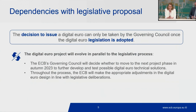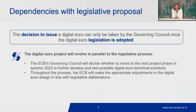A question we get a lot is how there can still be a legislative proposal on the table while the Governing Council may potentially decide to move to a next stage in autumn this year. A decision to issue will only be taken by the Governing Council once the digital euro legislation is adopted. What we will do in parallel is further prepare and experiment to be as ready as possible for a potential next phase, keeping a close eye on how the legislation develops to make sure any future digital euro is fully in line with it.